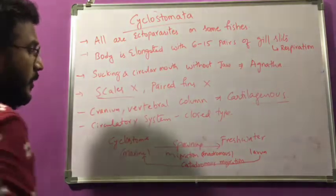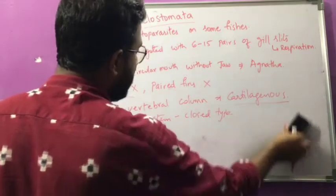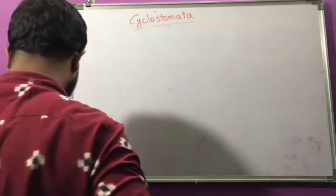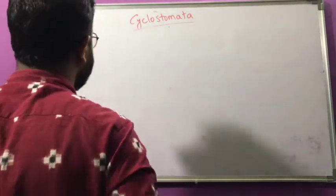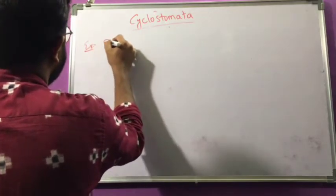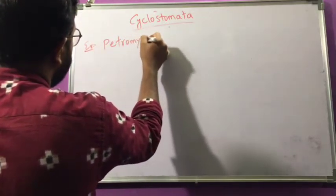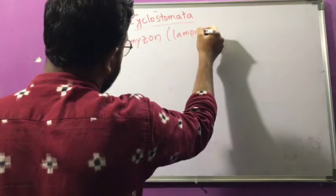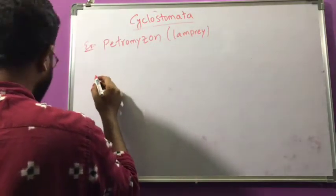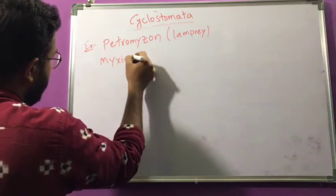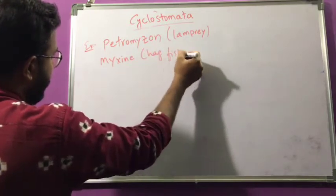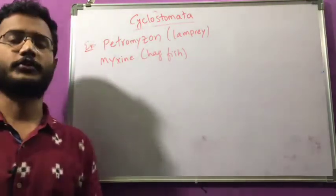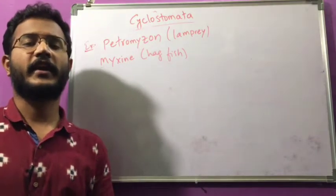These are the most important general characters of class Cyclostomata. The examples of this class are Petromyzon — common name lamprey — and Myxine — common name hagfish. These two examples belong to Agnatha, which do not have bony jaws.